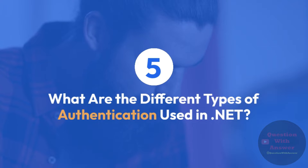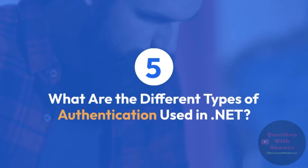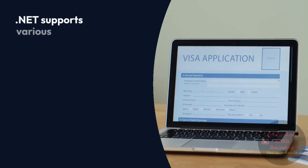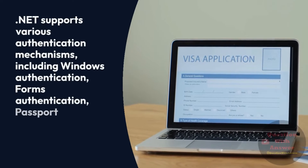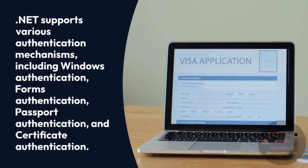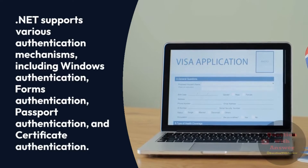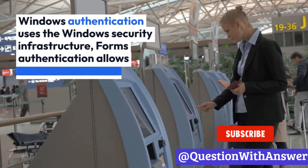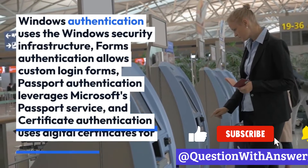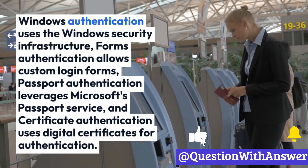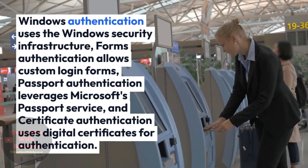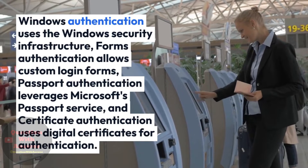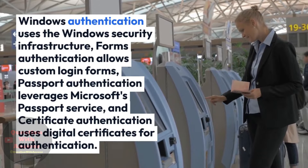Question 5: What are the different types of authentication used in .NET? Answer: .NET supports various authentication mechanisms, including Windows Authentication, Forms Authentication, Passport Authentication, and Certificate Authentication. Windows Authentication uses the Windows security infrastructure, Forms Authentication allows custom login forms, Passport Authentication leverages Microsoft's Passport Service, and Certificate Authentication uses digital certificates for authentication.